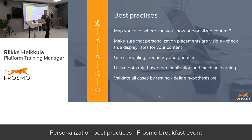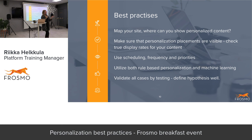There are two things when talking about segmentation and showing relevant content: rule-based personalization, and also product recommendations where a machine decides based on what you've done or based on similar visitor behavior what to show. You should combine both of these. The last thing is to validate all cases by testing them — don't do personalization just for the sake of it. Test whether it actually makes sense and whether your hypothesis was correct. Rather than testing ten banners to see which is best, it's better to say 'I believe that for these people this kind of content is good — yes or no' — that's already a better approach when you have an assumption about what you want to achieve.